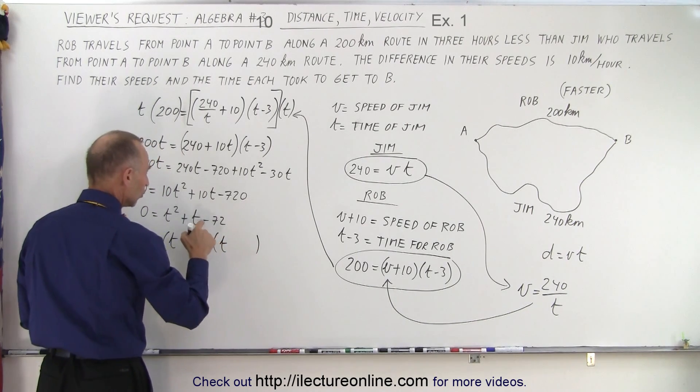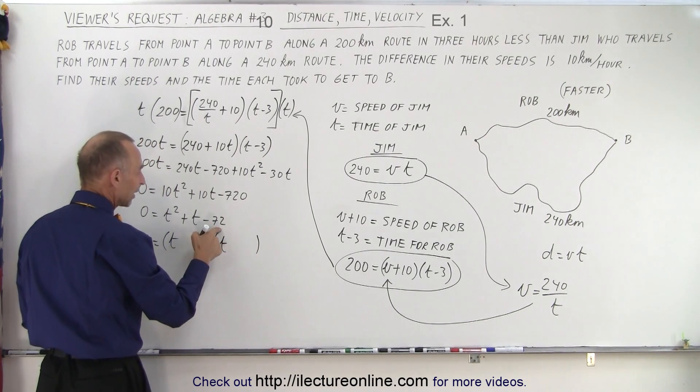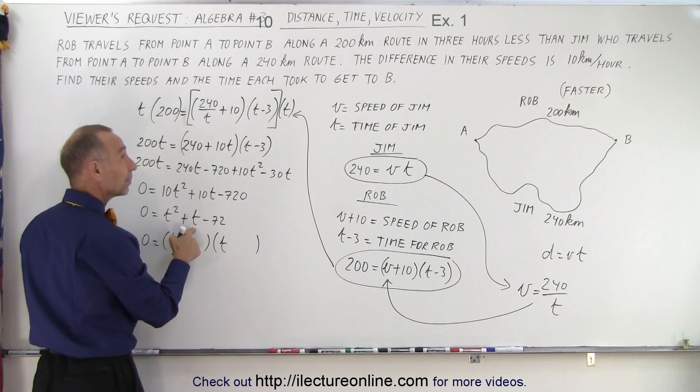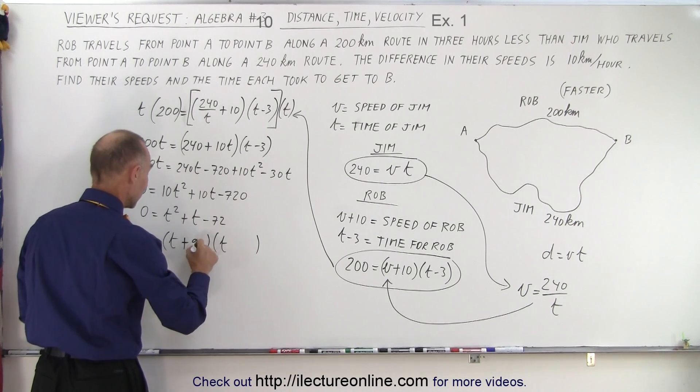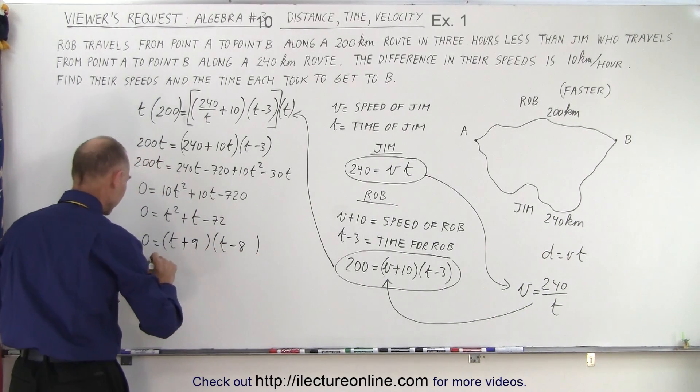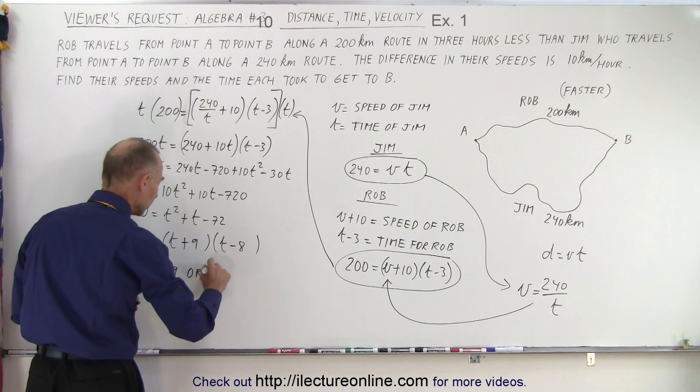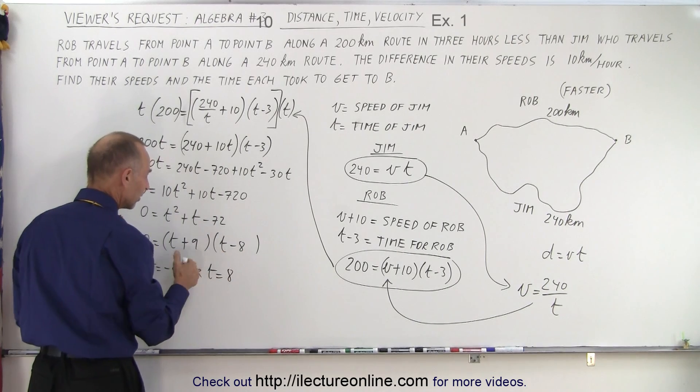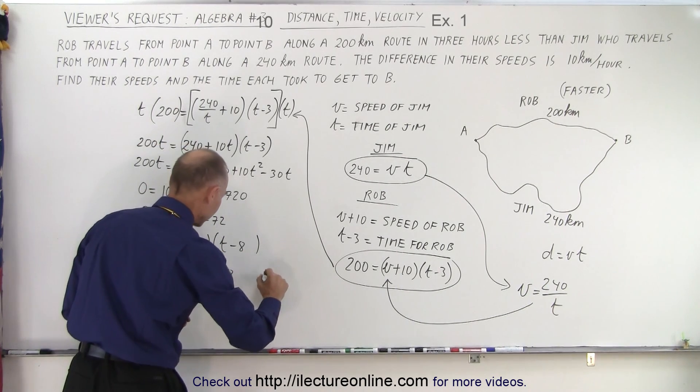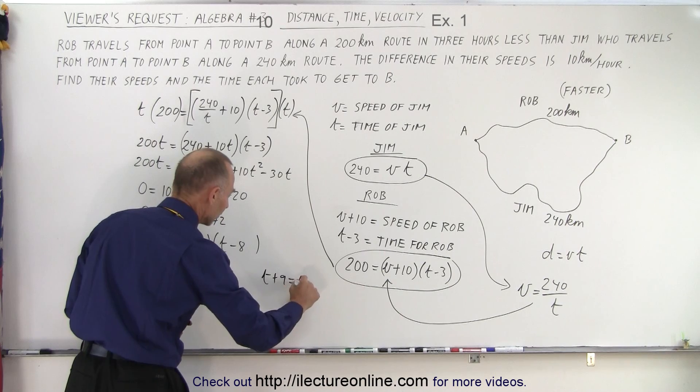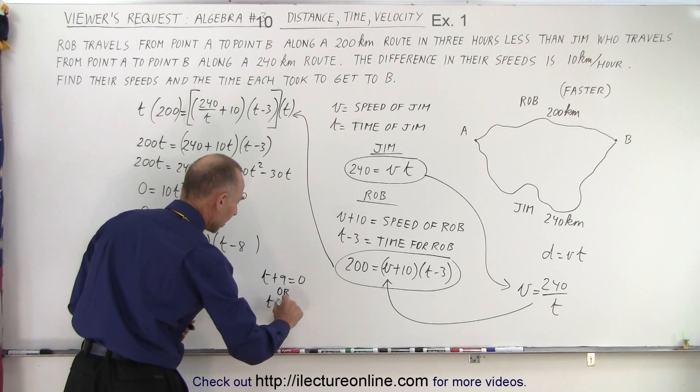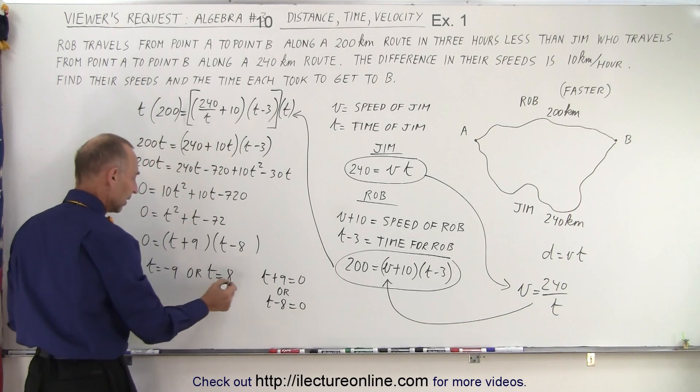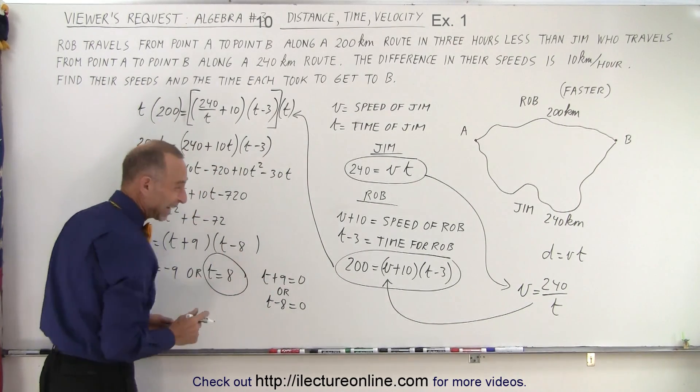T and T, two numbers when I multiply get minus 72 and one is one bigger than the other. Nine and eight. Nine times eight is 72 so plus nine and negative eight, which means T equals minus nine or T equals plus eight. If I multiply two numbers together and get zero that means T plus nine equals zero or T minus eight equals zero. This is the only plausible answer, you can't have negative time.